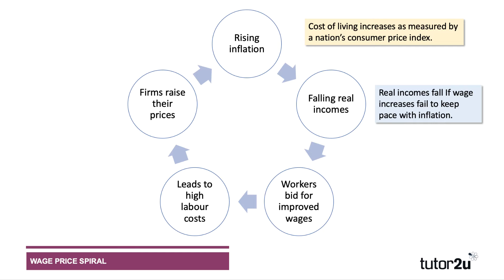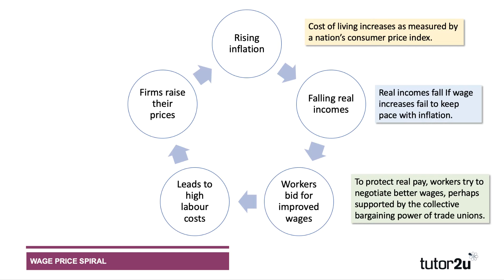People's real incomes tend to go down. Real incomes measure what you can actually buy with a given nominal or money income. If wages are rising by only 2% but inflation is 4%, then real incomes are falling by minus 2%. And it's that fall in real income that can then trigger workers bidding to improve their wages — their real pay has gone down. So workers may try to negotiate better wages.